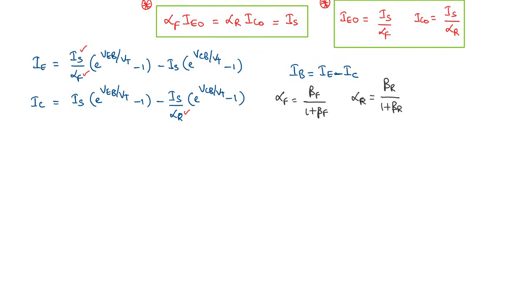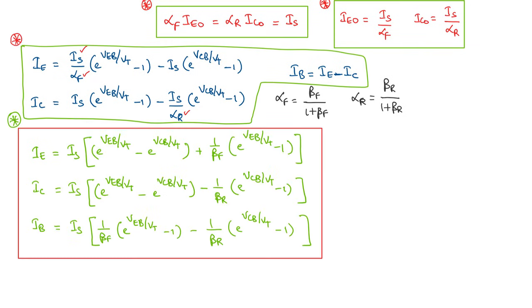We can write expressions for I_E, I_C, and I_B in terms of β_F and β_R instead of α_F and α_R. The original equations are in terms of I_S, α_F, α_R, and the junction potentials. The rewritten equations are in terms of I_S, β_F, β_R, and the potentials V_EB and V_CB across the junctions.